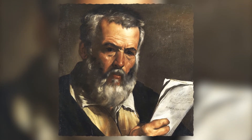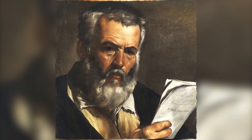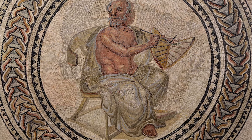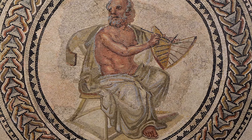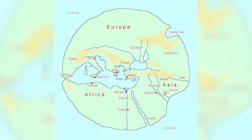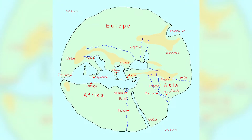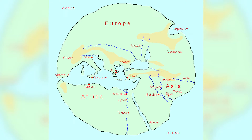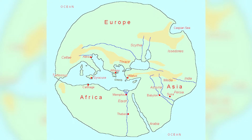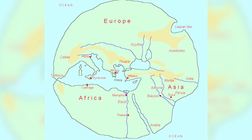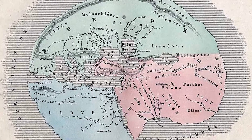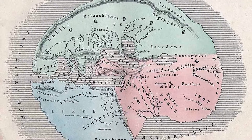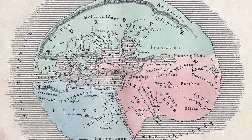Anaximander, a philosopher from the 6th century BC, is credited with having made one of the first maps of the world. He believed that the globe was centered on the Aegean Sea, encircled on all sides by the sea, and that it all rested atop a great column.